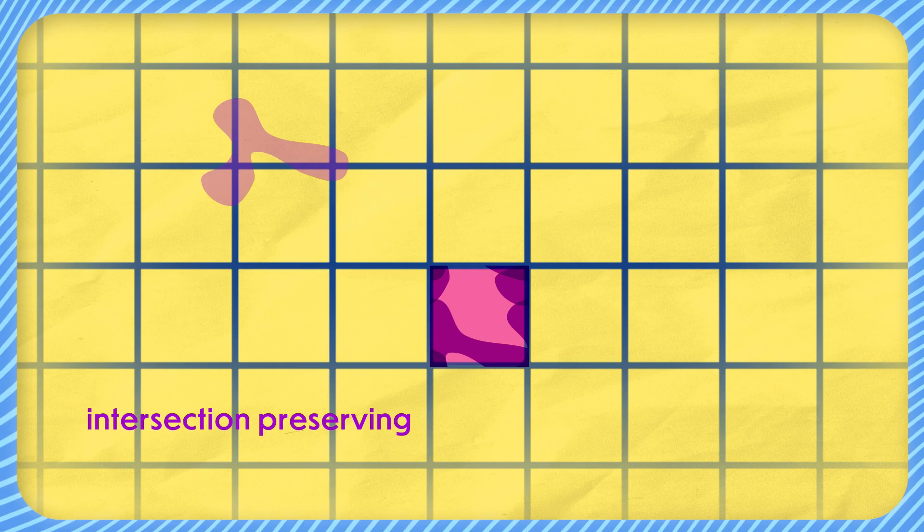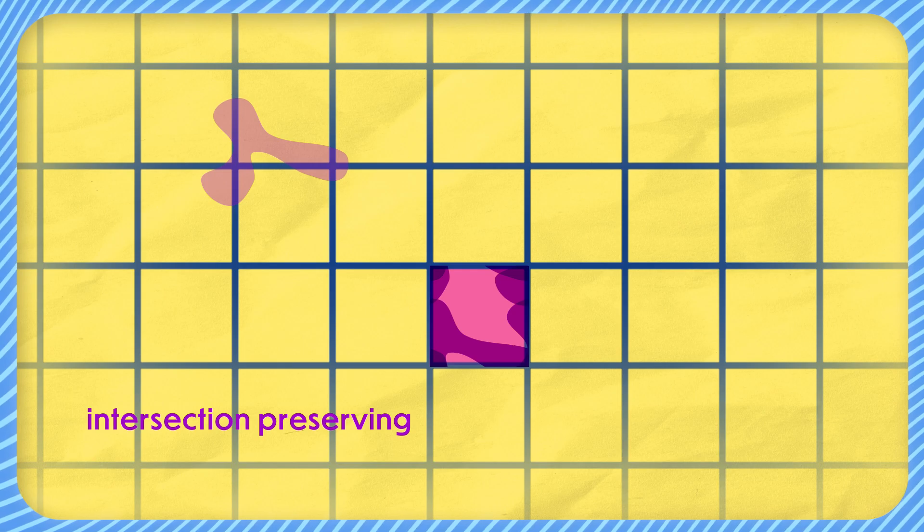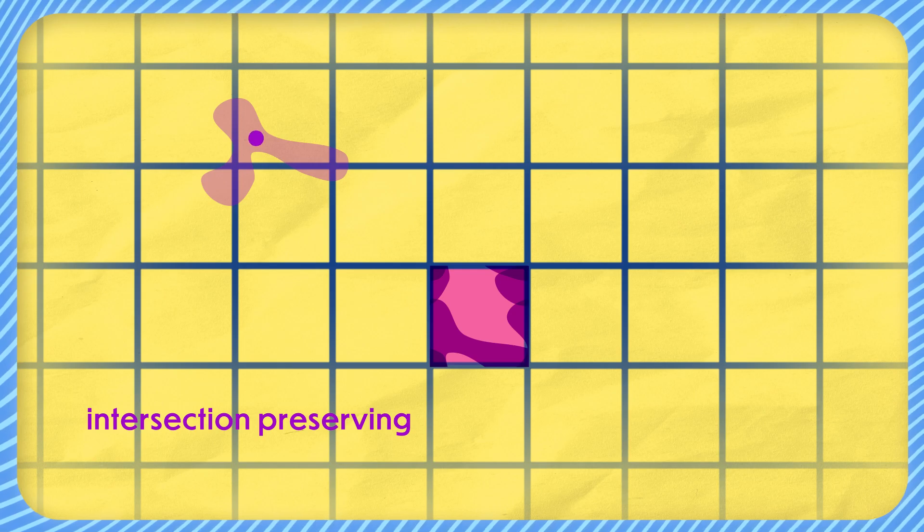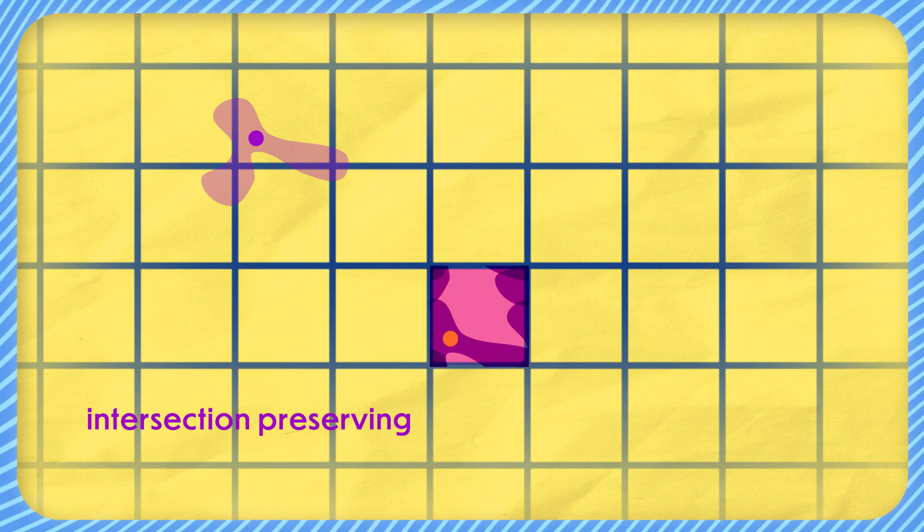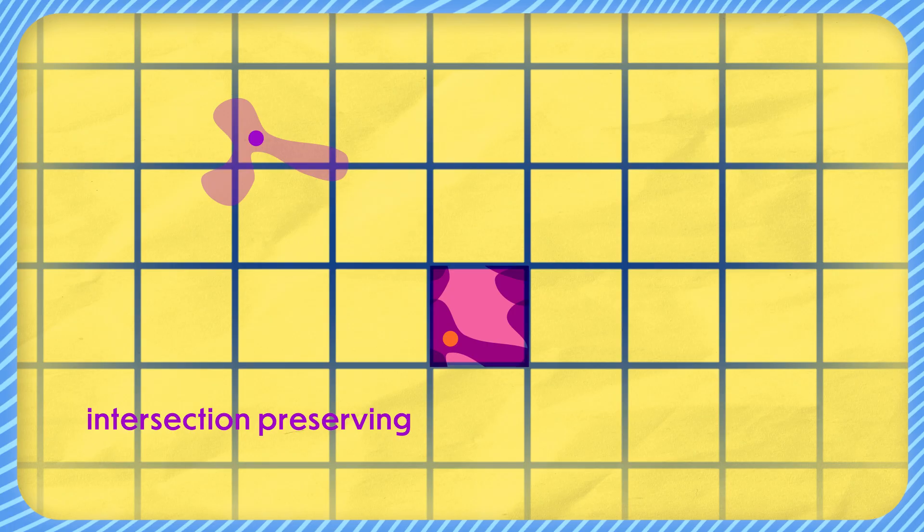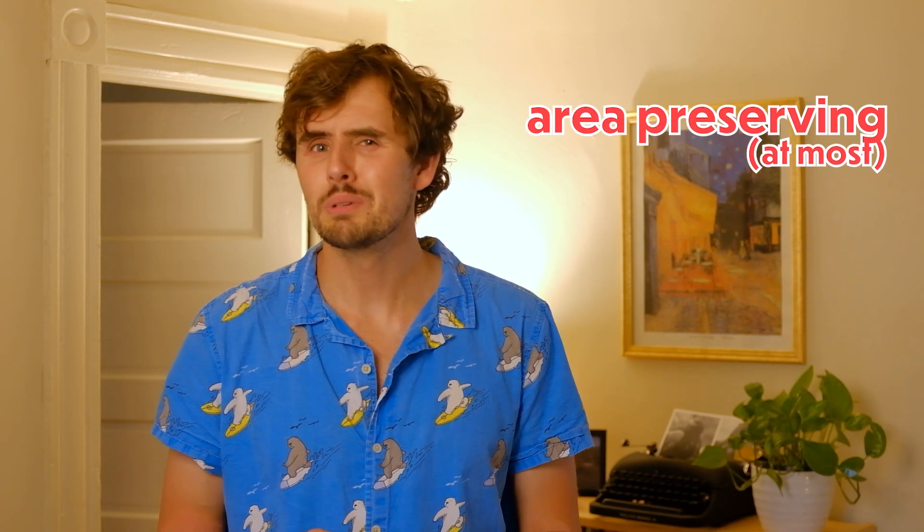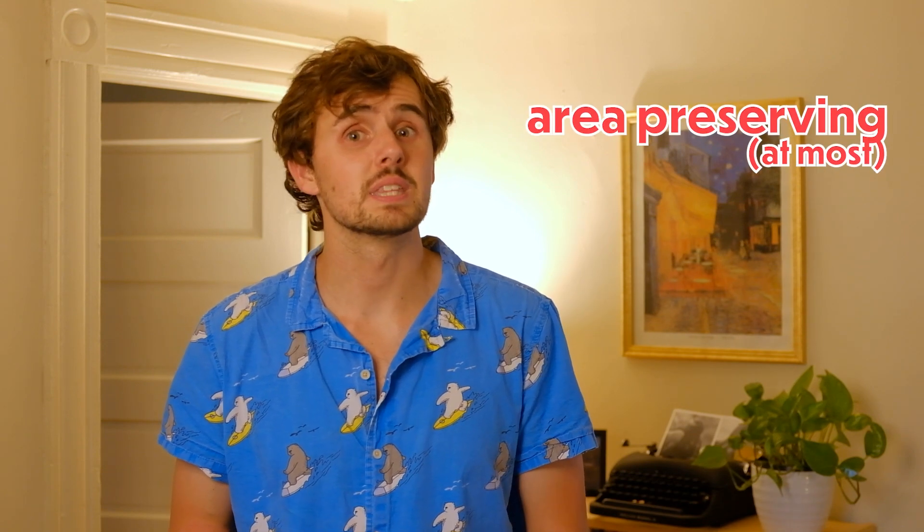Here's now where we need to notice two essential properties of this function we just created. One is that this function is what we'll call intersection preserving. What that means is that if a shape and a point intersect in the infinite grid, when passed through the function, their outputs will intersect in the reference box as well. Additionally though, and here's the important one, this function is also what we'll call at most area preserving. What I mean by this is that for any shape that lives in the infinite grid, when it gets passed through the function, the resulting shape in the reference box will have area at most the area of the shape you started with, but probably less even.